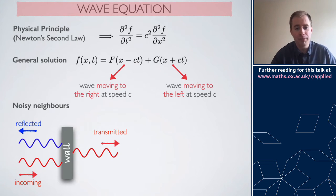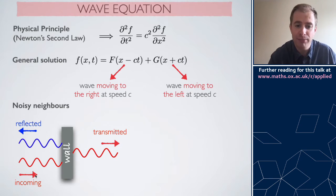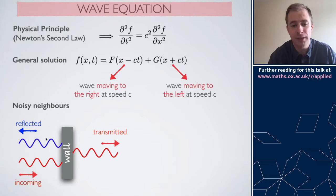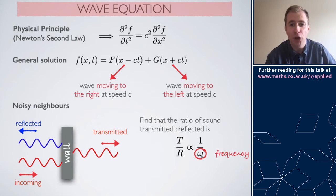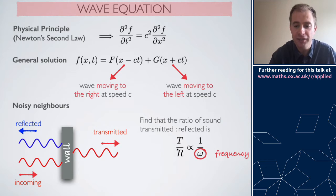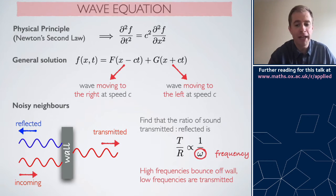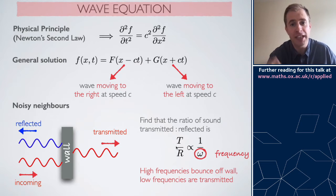That's what the general solution of the wave equation looks like — waves traveling in two different directions. This is also what you might expect thinking about sound: your speaker might be in your bedroom separated from neighbours by a wall, and sound travels from the speaker to the wall. After the third year course on waves and compressible flow, you'd be able to calculate the relative ratio of what's transmitted to what's reflected, and it turns out that ratio is inversely proportional to the frequency omega — so bass notes (low frequencies) tend to be preferentially transmitted, while high frequency melodies tend to reflect. That's why at traffic lights you hear a thumping bass from a nearby car even when there's a loud melody too.